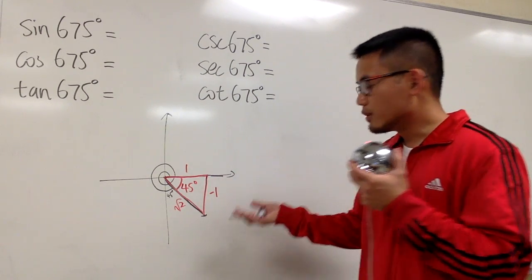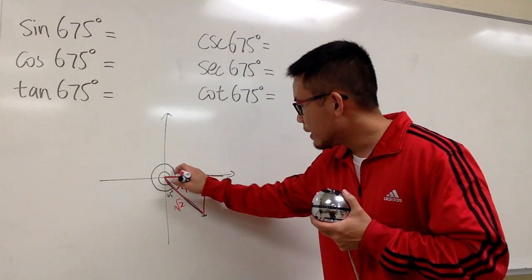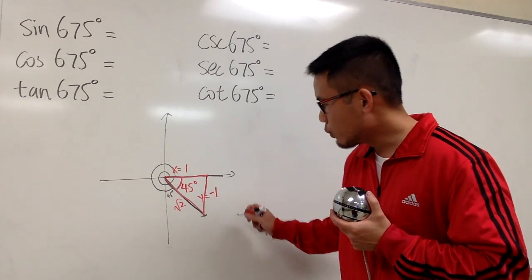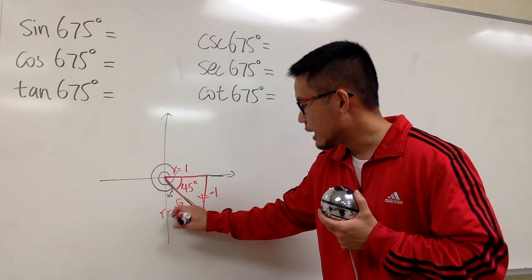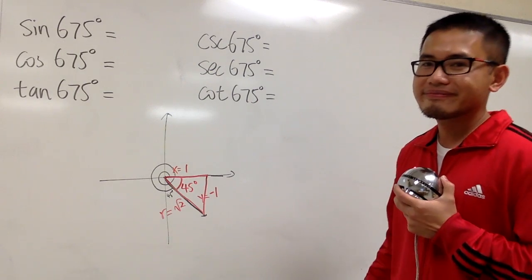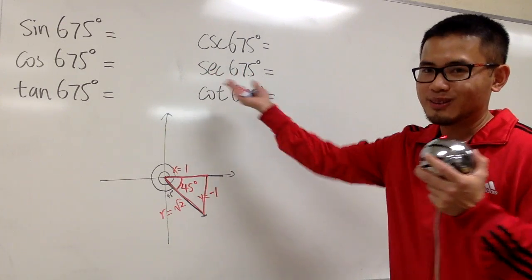All right, so this is what we're going to use. This is the x value, it's positive 1. And this is the y value, which is negative 1. And the r is the hypotenuse, which is always positive. And in this case, it's square root of 2. And now we can just go ahead and fill the rest.